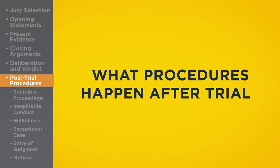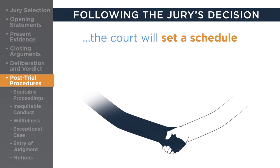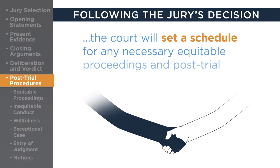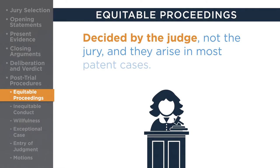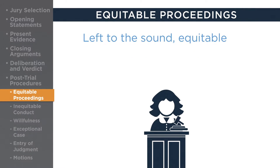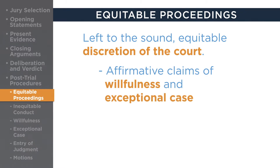What procedures happen after trial? Following the jury's decision, the court will set a schedule for any necessary equitable proceedings and post-trial motions. Equitable proceedings deal with matters decided by the judge, not the jury, and they arise in most patent cases. They are called equitable issues because they are left to the sound, equitable discretion of the court. The most common equitable issues are the affirmative claims of willfulness and exceptional case and the defense of inequitable conduct.